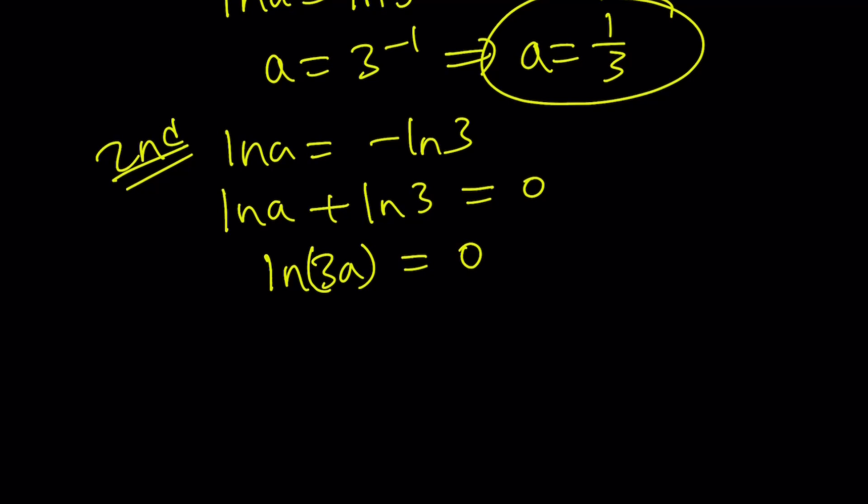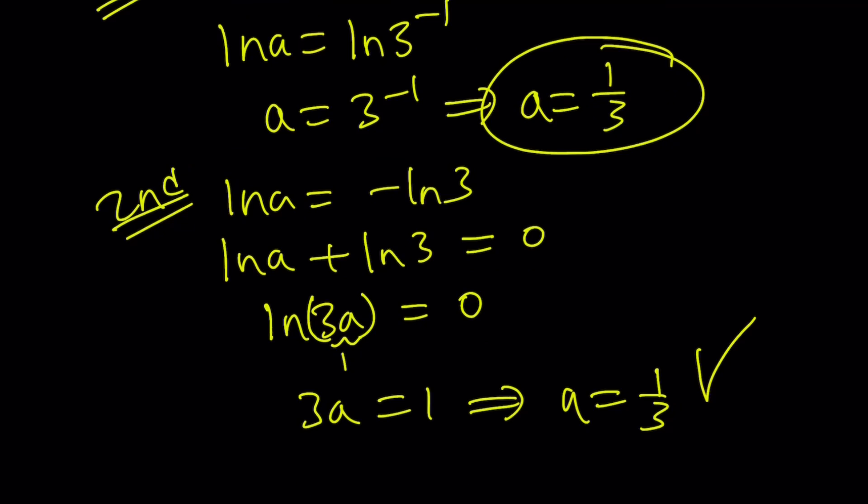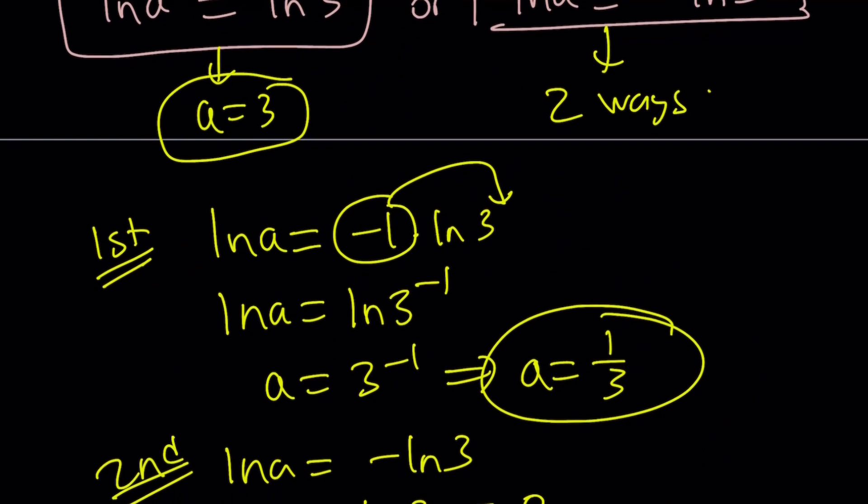ln of what equals 0? The answer is 1. So, this must be 1, which means 3a equals 1. And this indicates the same thing: a equals 1 third. Great. So, there are different ways to go about it, whichever you like better.